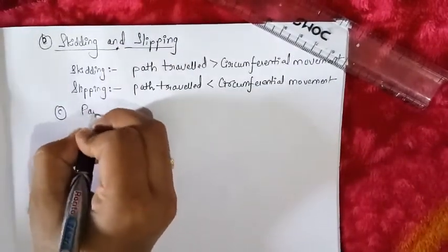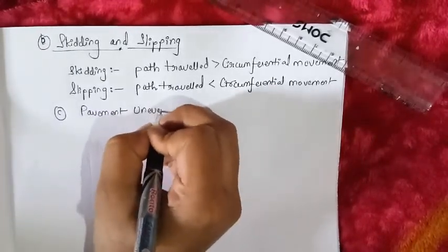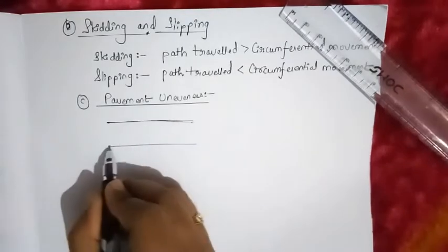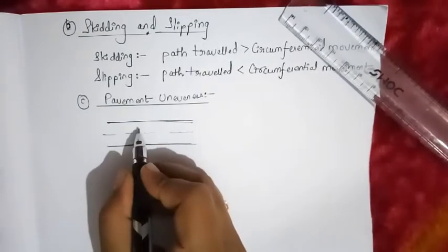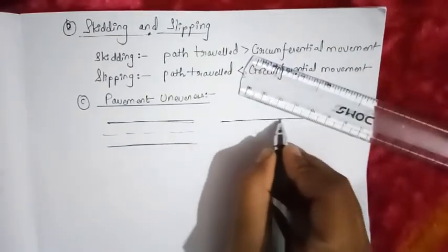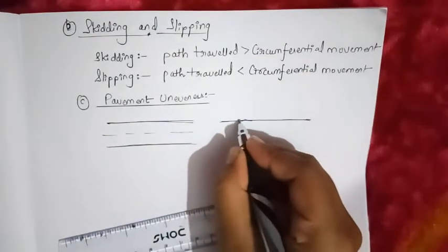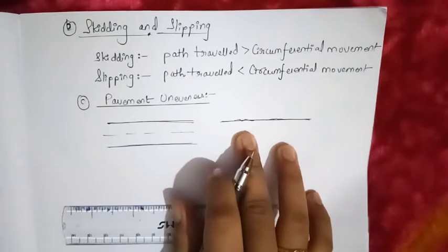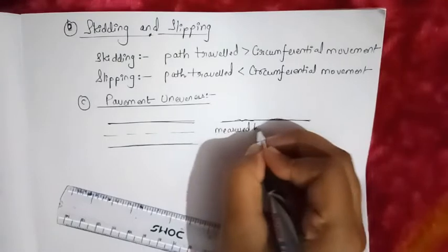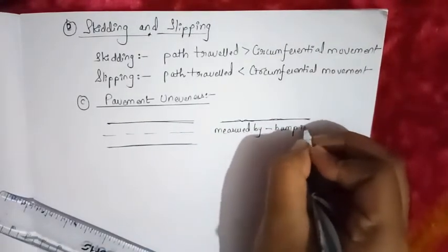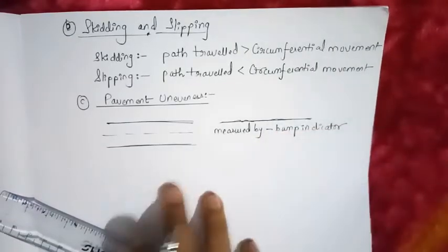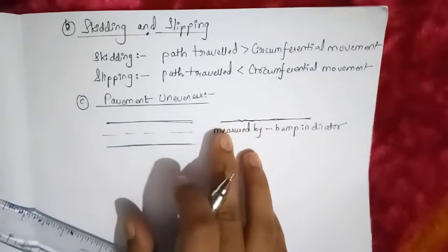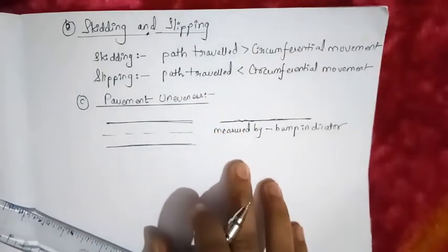Next we will see the third part of pavement characteristics: pavement unevenness. If we look at a pavement from the top view this is the centre line, but from the side view we can see the upper surface. If there is some unevenness or undulation in the pavement, we can measure it using an instrument known as the bump indicator. Using the bump indicator we can measure the unevenness in the pavement.